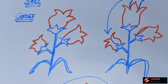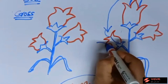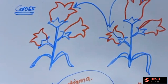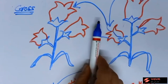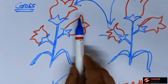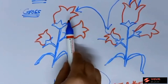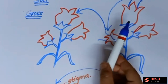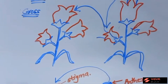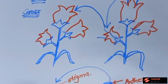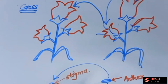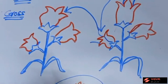In cross-pollination, the transfer of pollen grain from anther of stamen to the stigma of carpel takes place between two different flowers of two different mother plants, but of the same species. The two plants are different — one flower is on one plant and another flower is on another plant — but both belong to the same species.